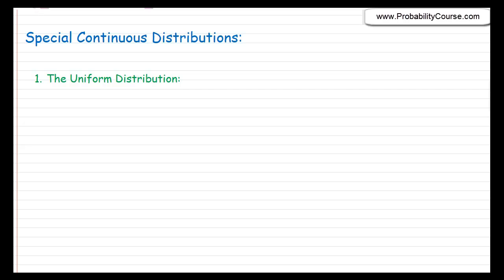So far we have discussed the theory of continuous random variables, and now we would like to talk about some special continuous random variables that are used frequently in practice. In this video we would like to start with the easiest one, which is the uniform distribution. In fact, we discussed the uniform distribution before.